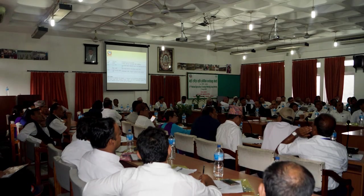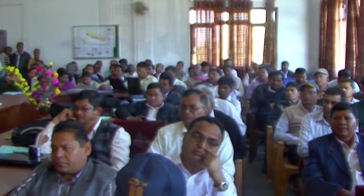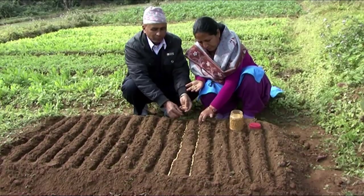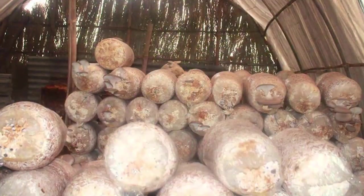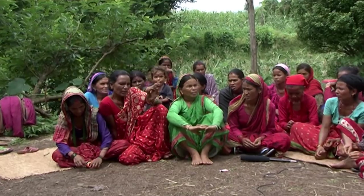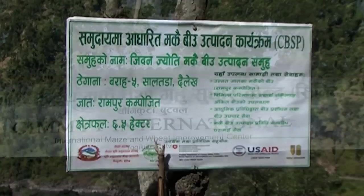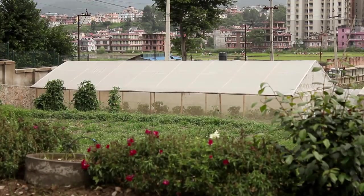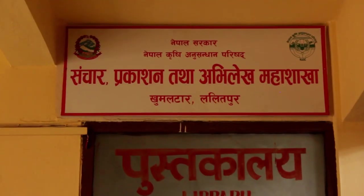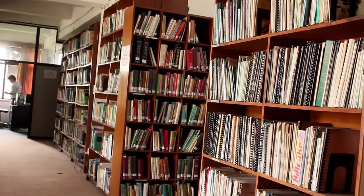NARC organizes seminars, meetings, and workshops with different partners and shares technological achievements with its stakeholders to make research output more effective and client-oriented from time to time. To make research output farmers friendly, NARC conducts interactions and group discussions with the farming community and other research partners at different levels. NARC, along with its regular tasks for generating new technology and conducting agricultural research, has given priority to communication, publication, and documentation of research innovations as the felt need of the present time.